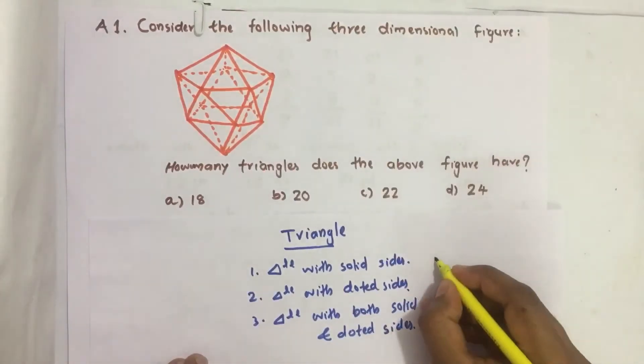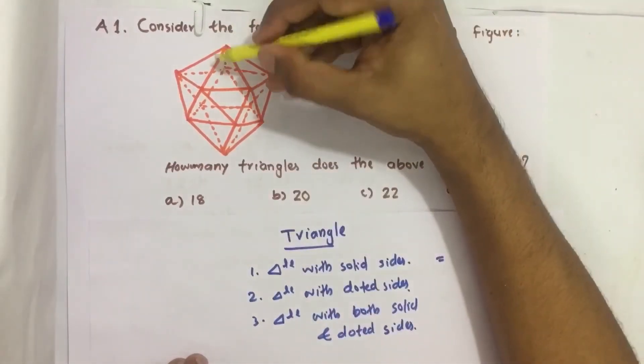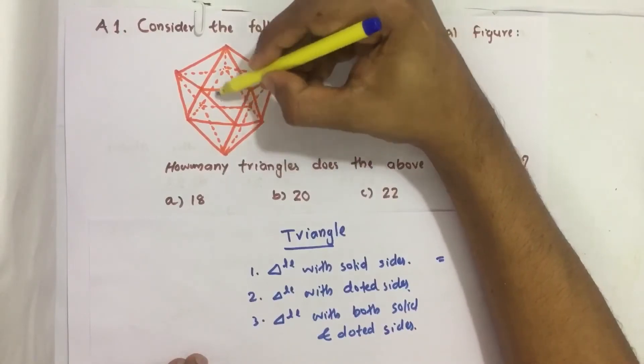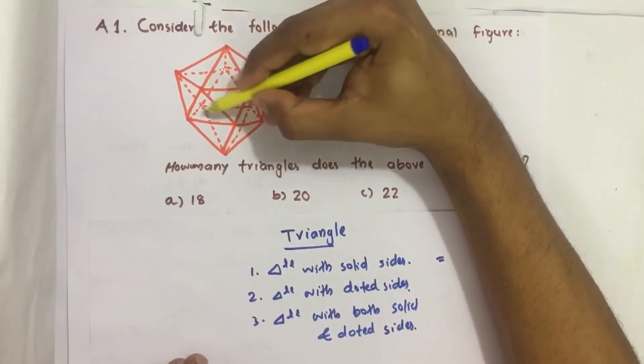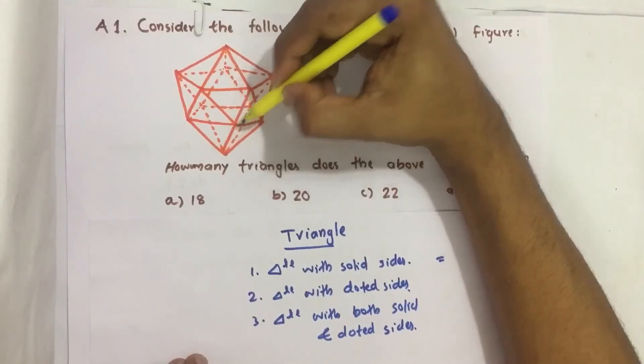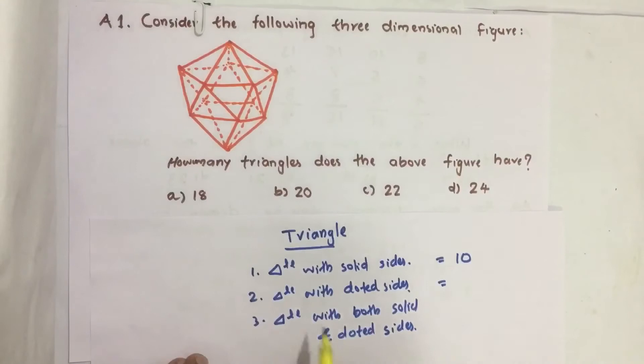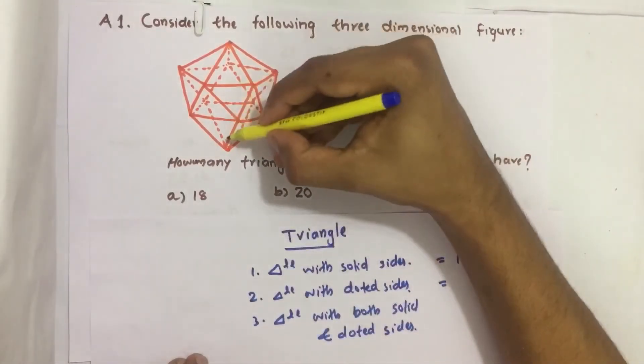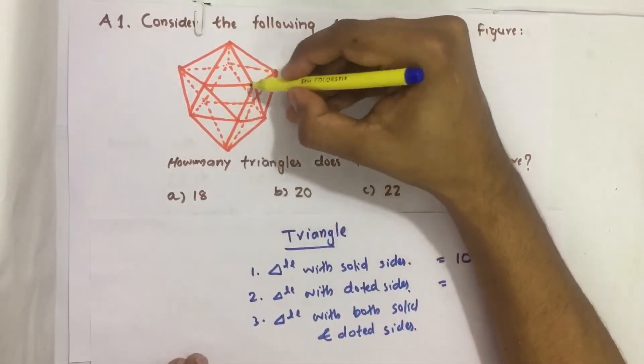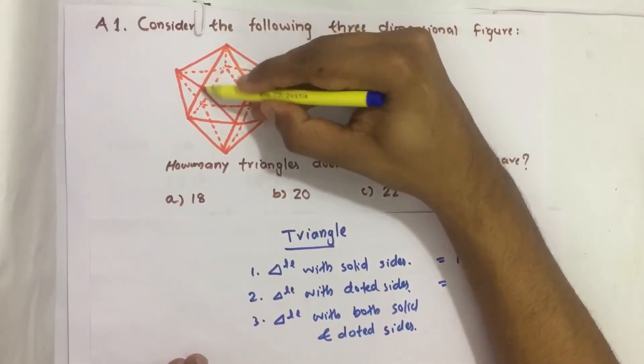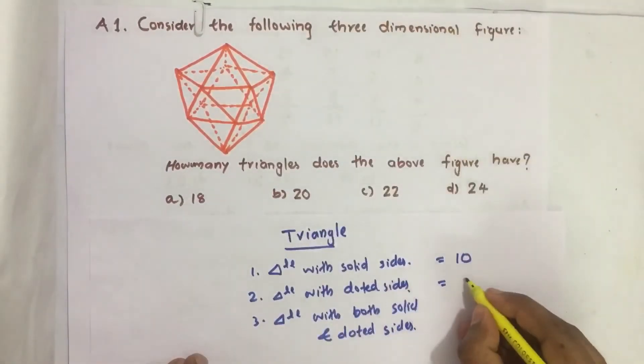count like this. First we count solid boundary: 1, 2, 3, 4, 5, 6, 7, 8, 9, 10—ten such triangles are there. Then next we count triangles with dotted lines: 1, 2, 3, 4—only four such triangles are there.